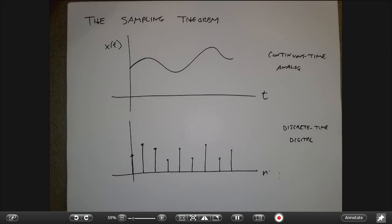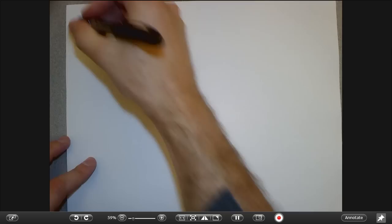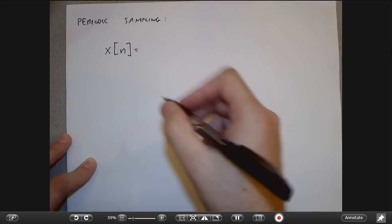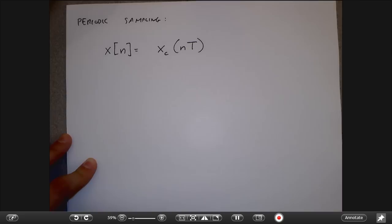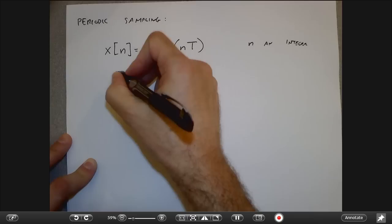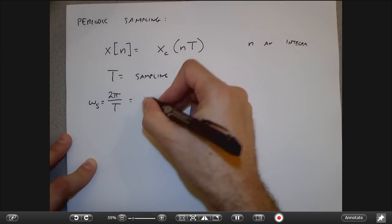Both of those things are ways of thinking about digitizing either the domain or the range of a signal. Most of the time we think about what we call periodic sampling. Periodic sampling means I obtain a discrete time signal by sampling a continuous time signal every capital T units. N is an integer, and capital T is called the sampling period. 2π/T, which I sometimes call ω_s, is called the sampling frequency.